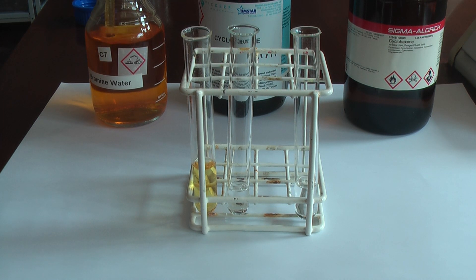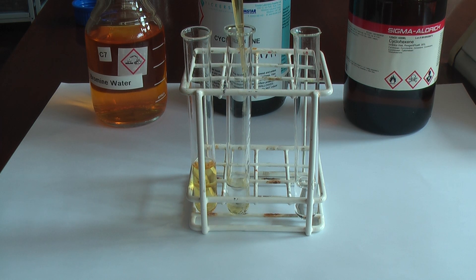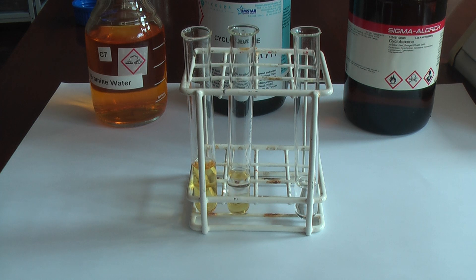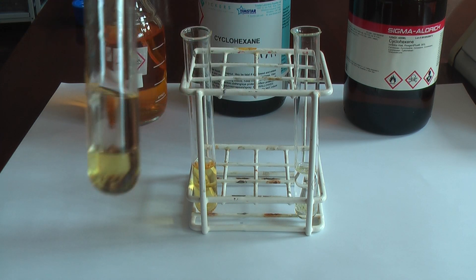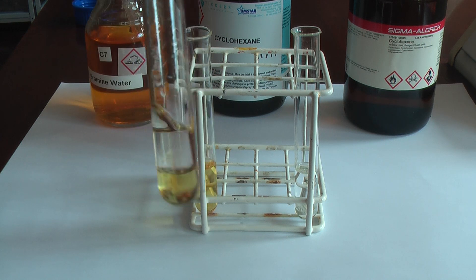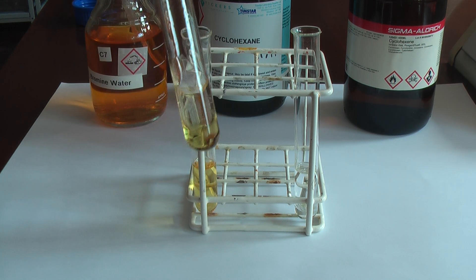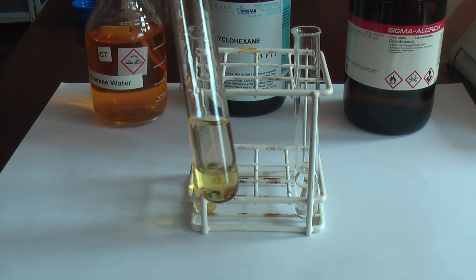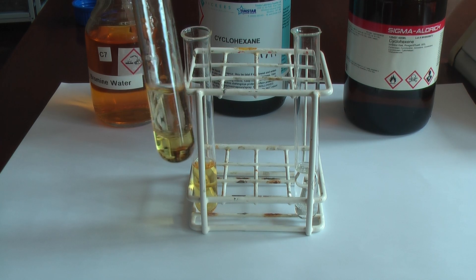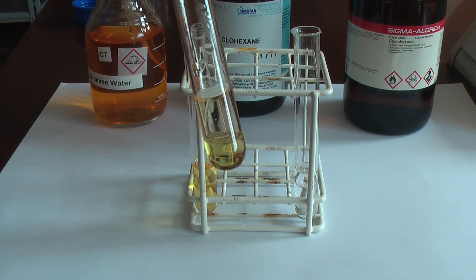Now when we place a little bit of bromine water in the cyclohexane and in the cyclohexene, what I want you to see is that it's formed two layers. The top layer is the cyclohexane because it's less dense, and the bottom layer is the bromine water, and it hasn't really changed color at all.